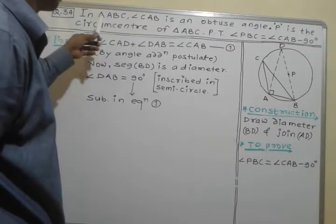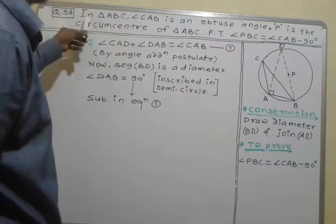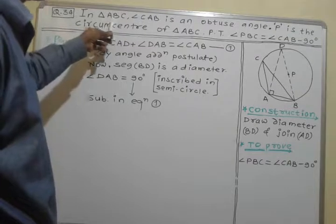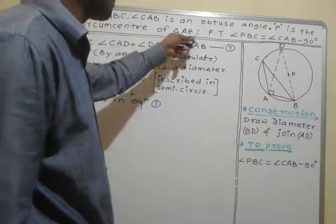This is an example of circle geometry problems. In triangle ABC, angle CAB is an obtuse angle.